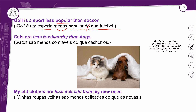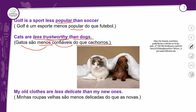Golf is a sport less popular than soccer. Estou inferiorizando aqui a comparação entre o golfe e o futebol. LESS — menos; popular — o adjetivo; THAN — do que o futebol. Menos popular que o futebol. Outro exemplo: cats are less trustworthy than dogs. Gatos são menos confiáveis do que cachorros. LESS + trustworthy + THAN dogs.